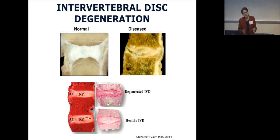That degeneration progresses through and involves the nucleus, the annulus, the cartilage end plate, and the bone. You can see here the appearance of a normal intervertebral disc versus an obviously pathological, degenerate disc — collapsed and no longer functioning properly.